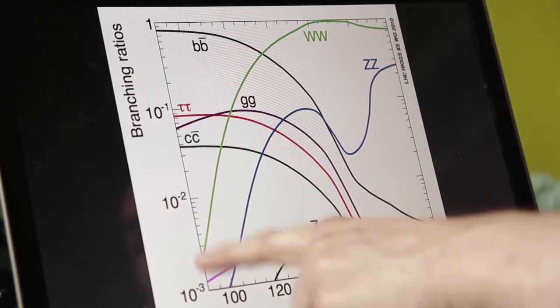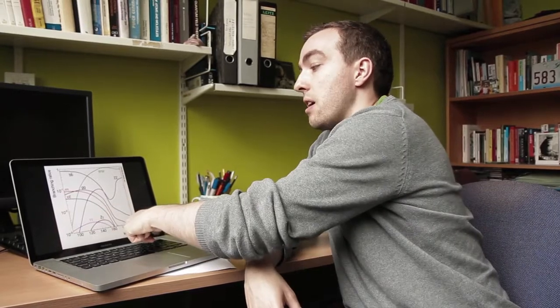There are a number of rarer signatures that you might observe, and those can be useful as well. For example, this pink line is when the Higgs decays to a pair of photons, which is something that people are especially interested in at the moment. Although it's a very rare signature—the Higgs will only decay to photons for this mass about 0.2% of the time—it's also a very clean signature without too much background, which makes it still really useful for searching for the Higgs.